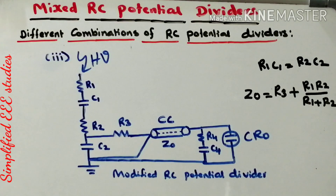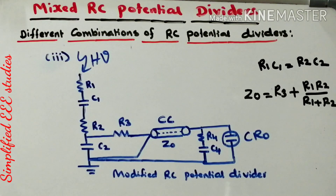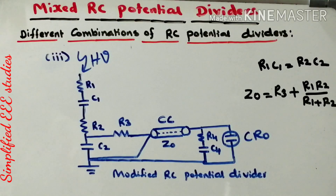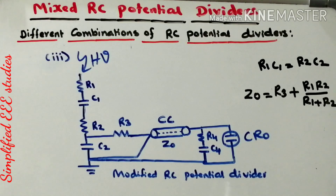This is about the Mixed RC Potential Divider. To conclude: today I explained why a Mixed RC Potential Divider is required — in a simple word, to improve the step response. I also explained different combinations of the Mixed RC Potential Divider. Thank you very much for watching this video. If you found this channel useful, please do subscribe.